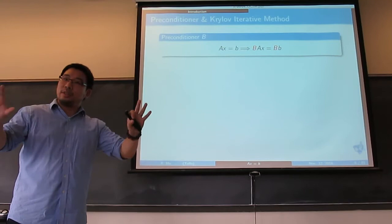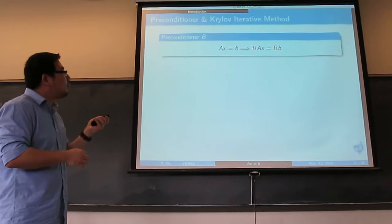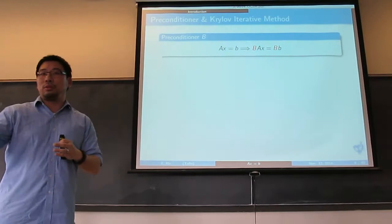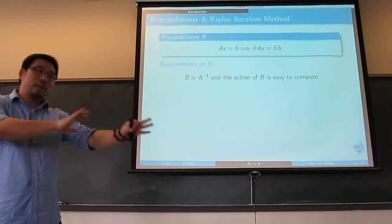You start with Ax = b, multiply B on both sides, you get BAx = Bb. The condition number for BA is supposed to be better than A, making the new preconditioned system easier to solve.